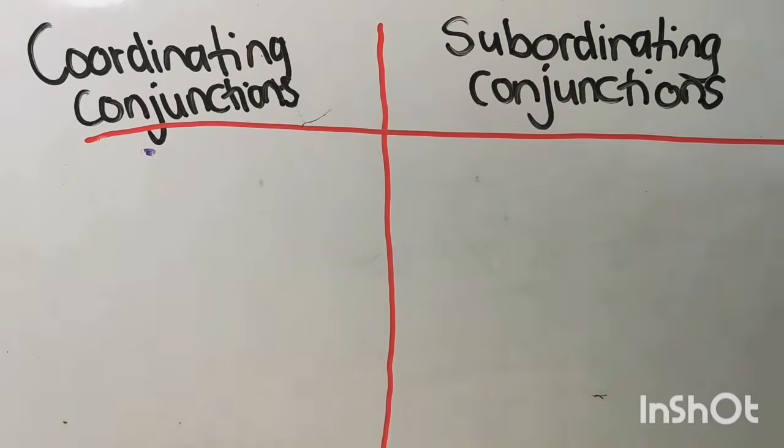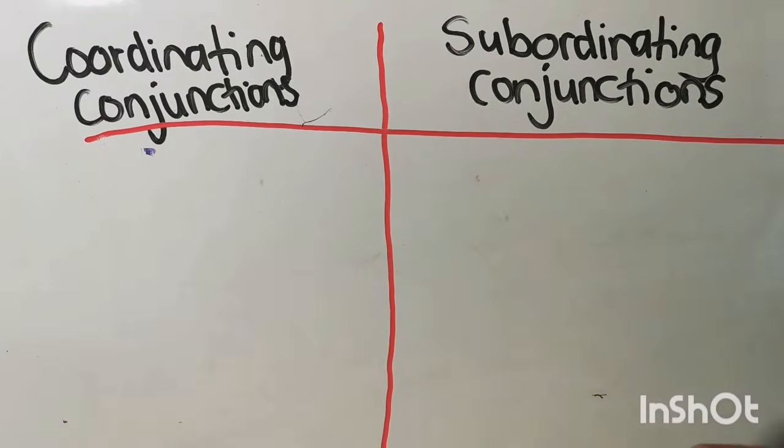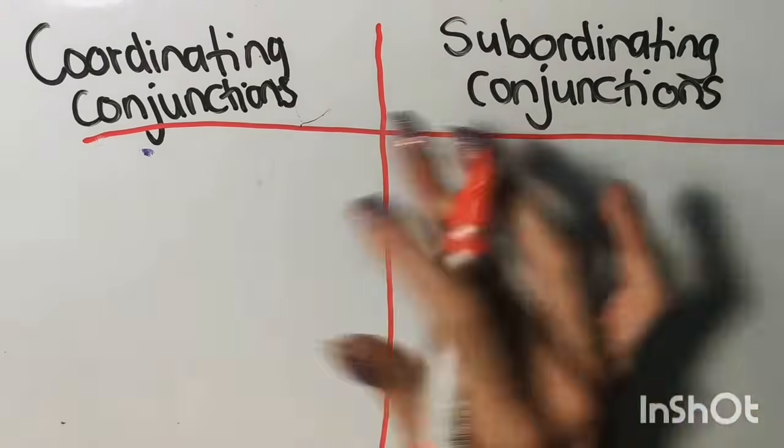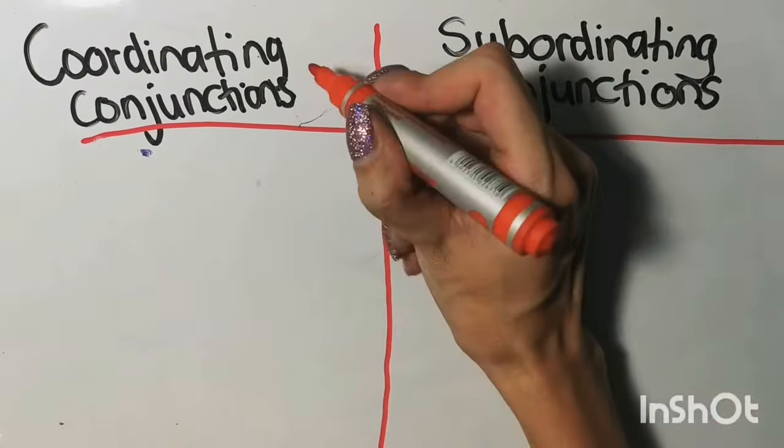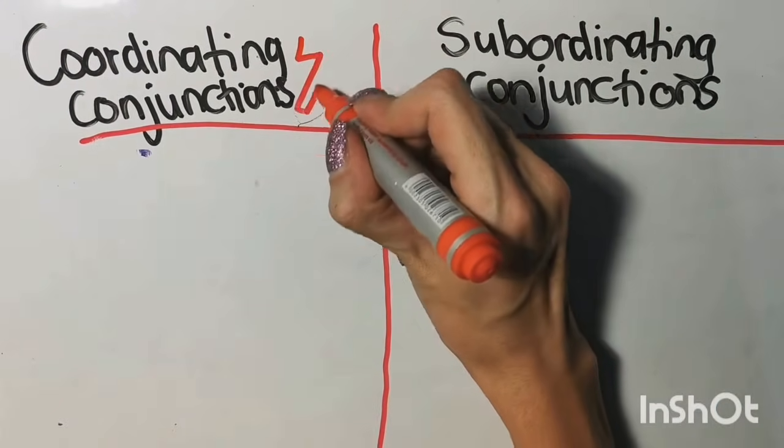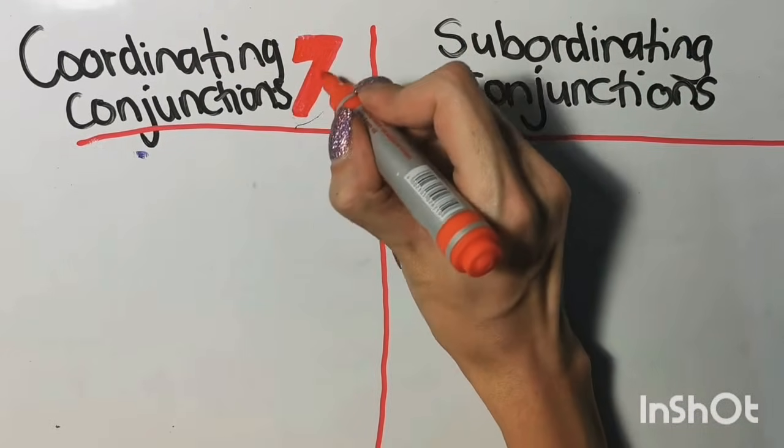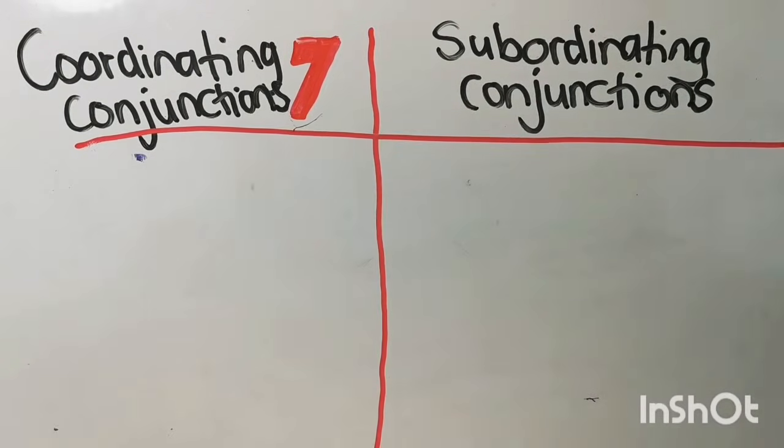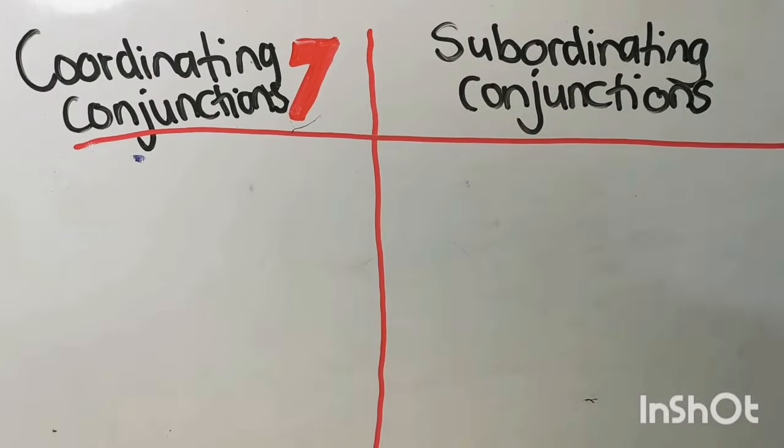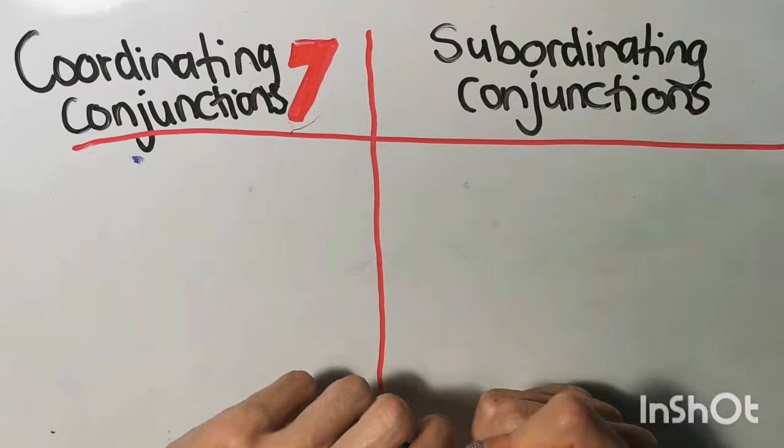In order for us to understand coordinating and subordinating conjunctions, I would say the best way is to compare them next to each other. There are many subordinating conjunctions. There really is a list of them. But if we know the seven coordinating conjunctions, of course it will be easier for us to know the subordinating conjunctions.